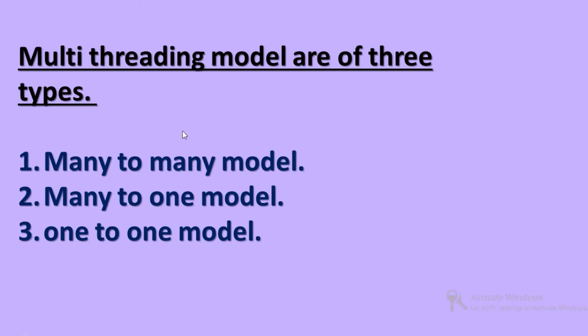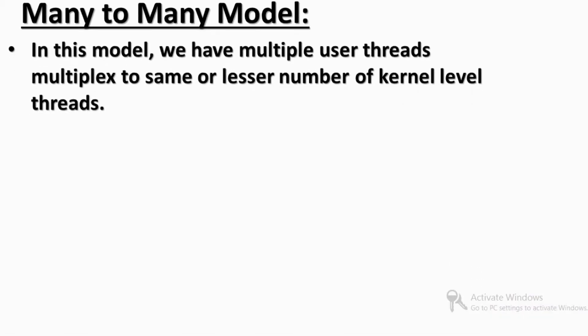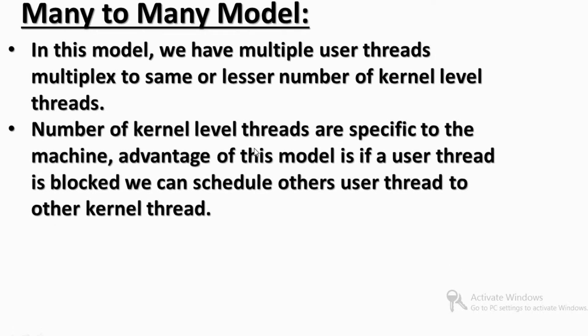In the many-to-many model, multiple user-level threads are mapped to the same or a fewer number of kernel-level threads. The number of kernel-level threads is specific to the machine.